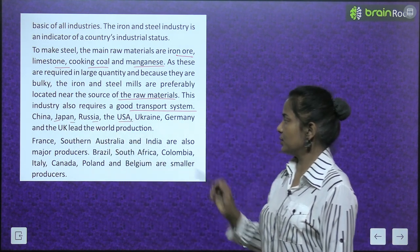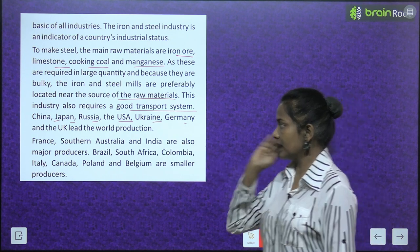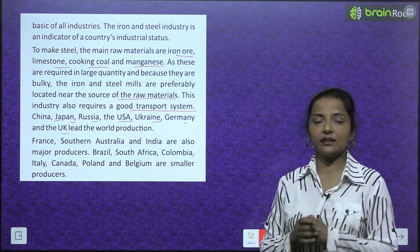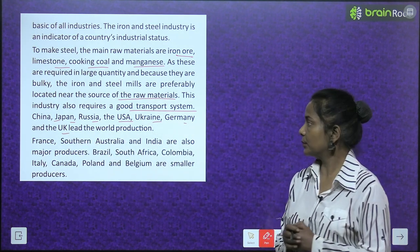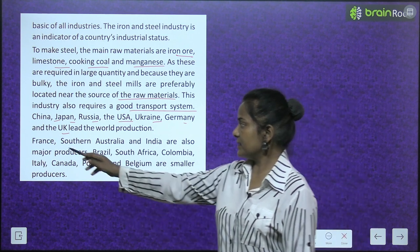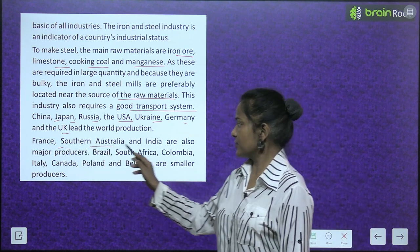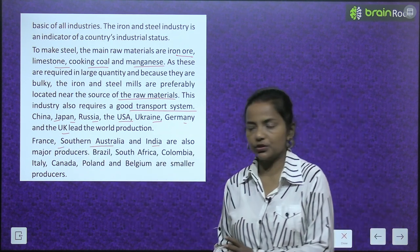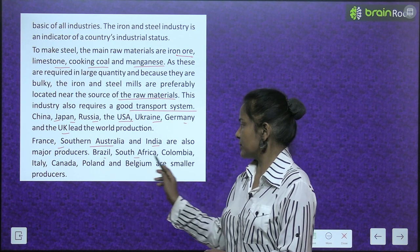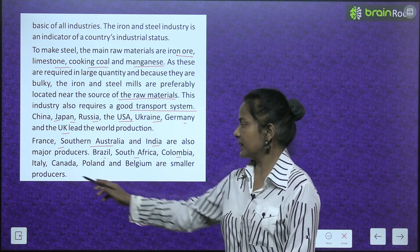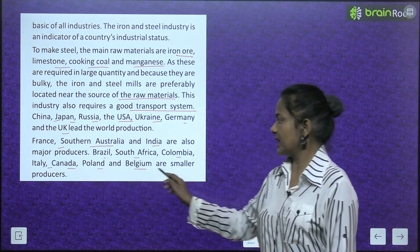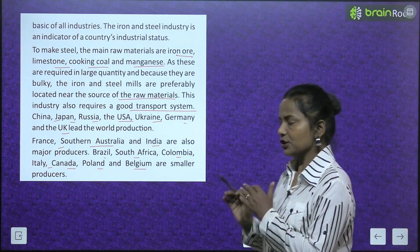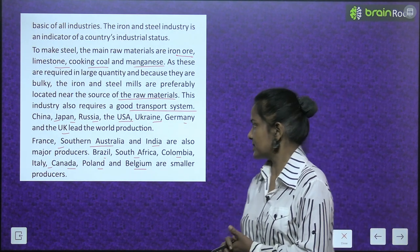China, Japan, Russia and the USA, Ukraine, Germany and the UK lead the world production of iron and steel. France, southern Australia and India are also major producers. Brazil, South Africa, Colombia, Italy, Canada, Poland and Belgium are small producers.